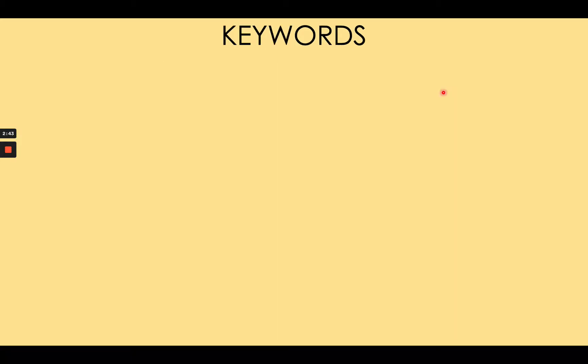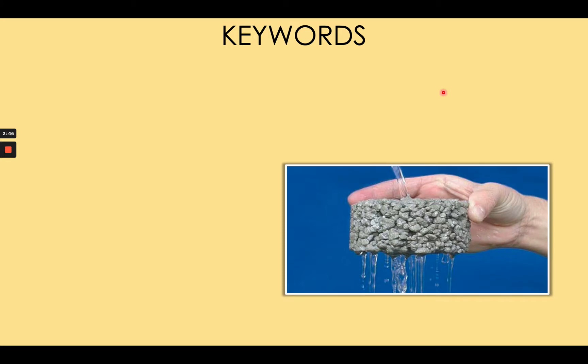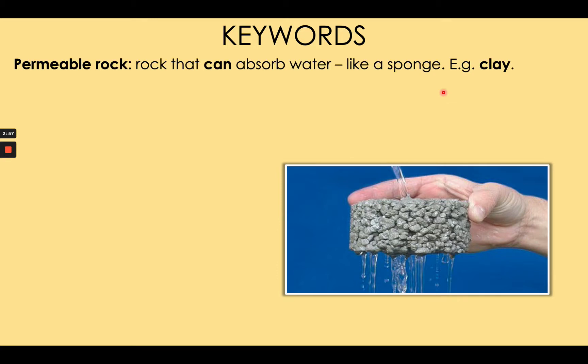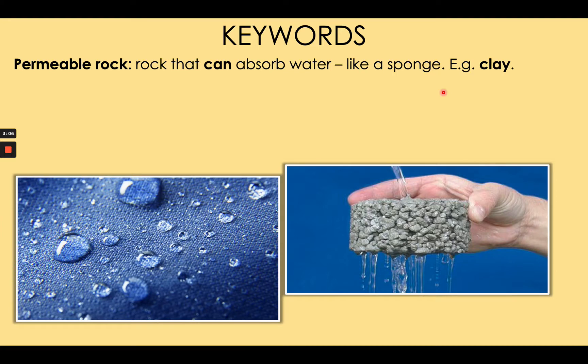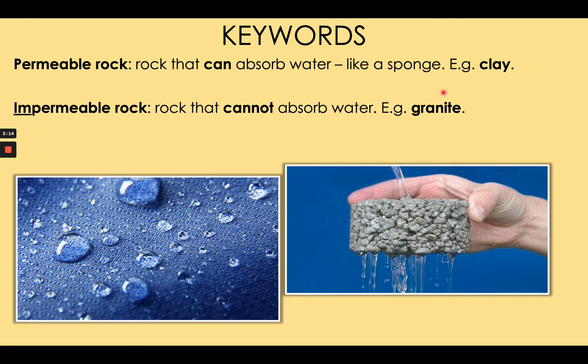Key words of today. Rocks that allow water to travel through them are called permeable. So permeable rocks allow water to go through them — clay is a common example. By contrast, rocks that do not allow water to go through are called impermeable rocks — an example would be granite. Please write these two key words and the definitions. You may wish to draw a diagram of each to help you understand.